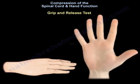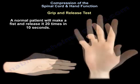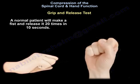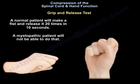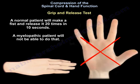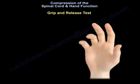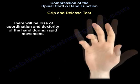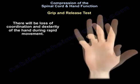As regard the grip and release test, a normal patient will make a fist and release 20 times in 10 seconds. A myelopathic patient will not be able to do that. In a positive grip and release test, the patient has trouble making a fist and fully extending the fingers. There will be loss of coordination and dexterity of the hands during rapid movement.